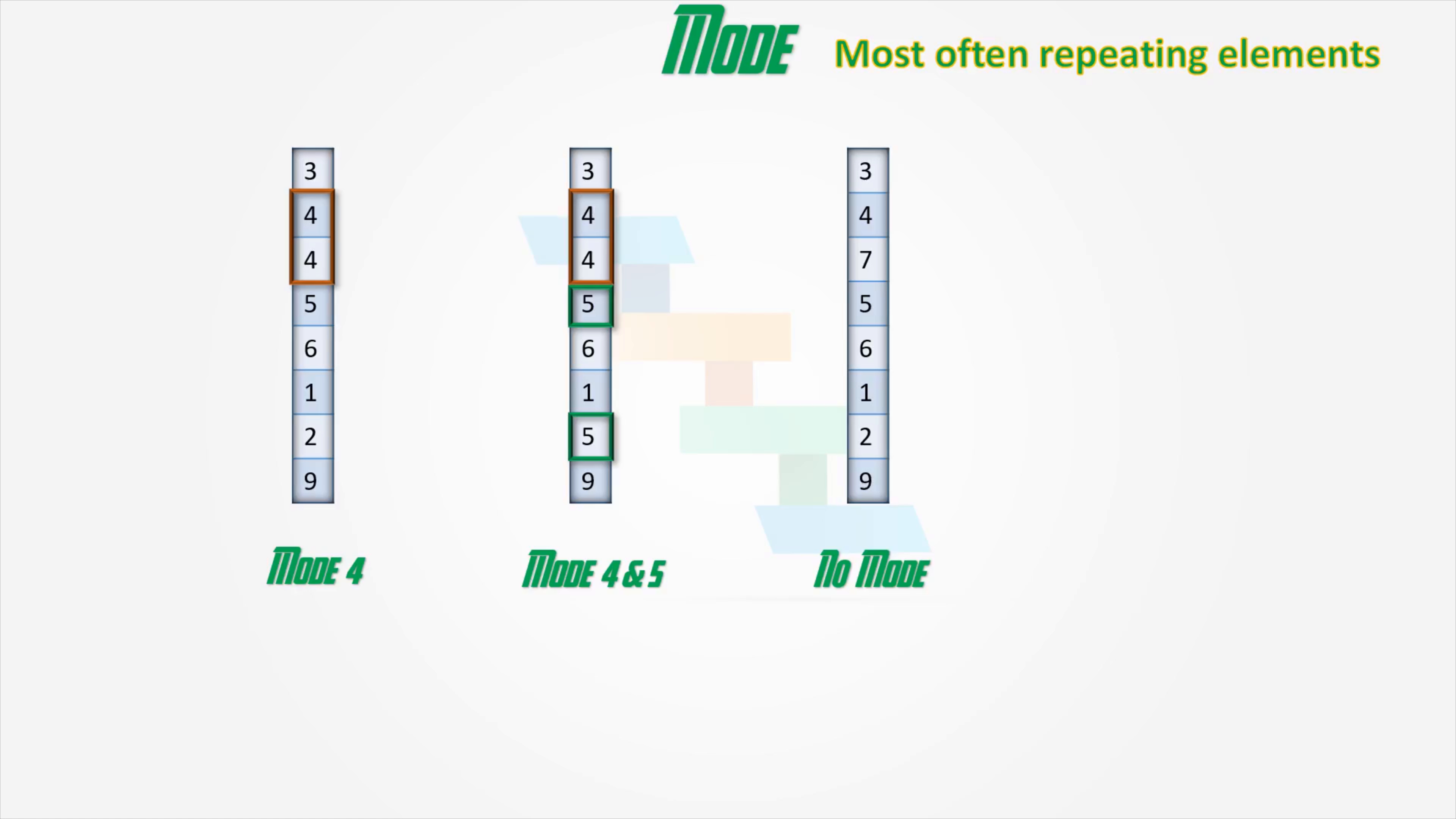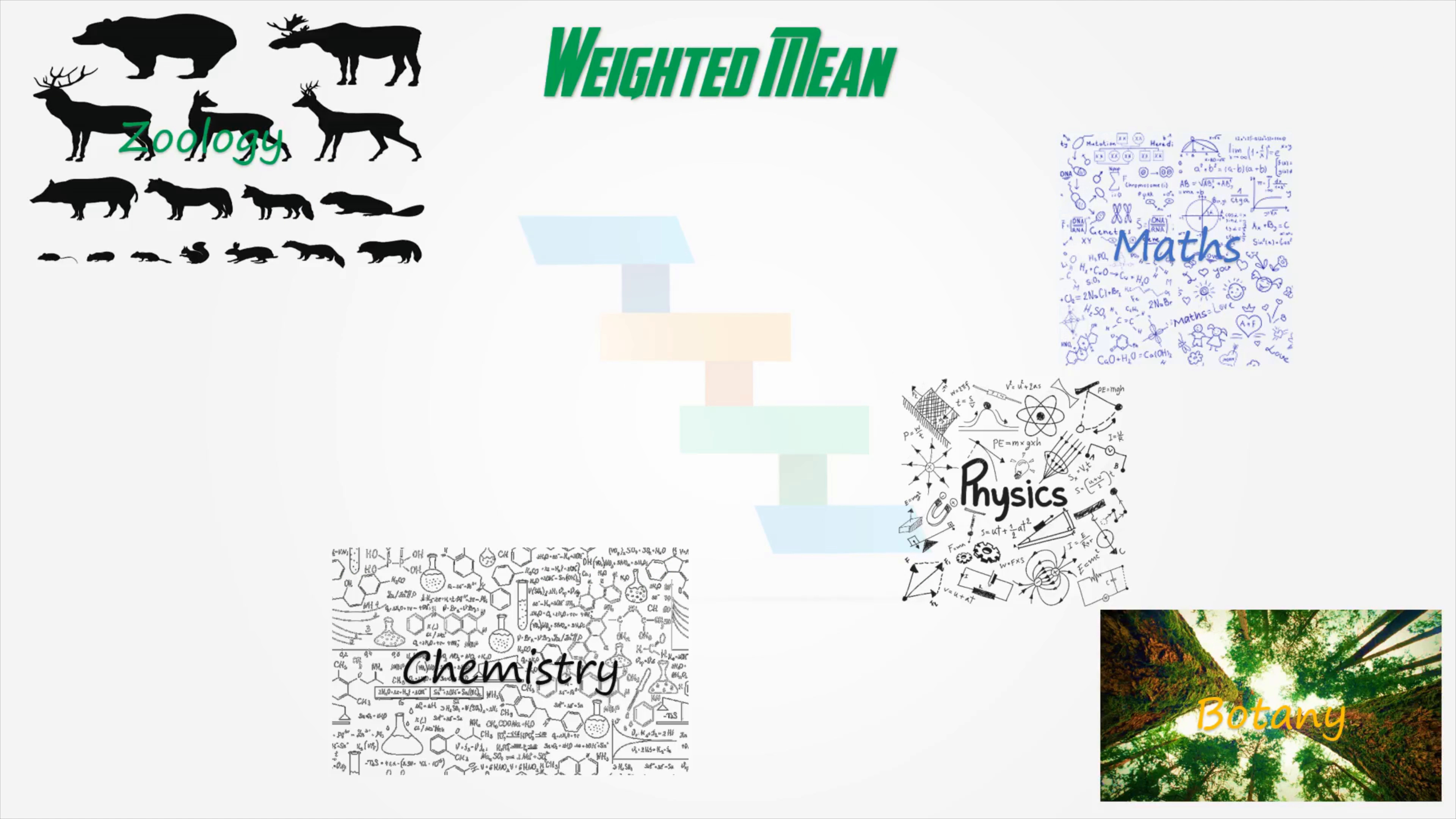Now we will see about weighted mean. The weighted arithmetic mean is similar to an ordinary mean except that instead of each of the data points contributing equally to the final average, some data points contribute more than others. Here we take a simple example that is exam result of a student in a particular grade.